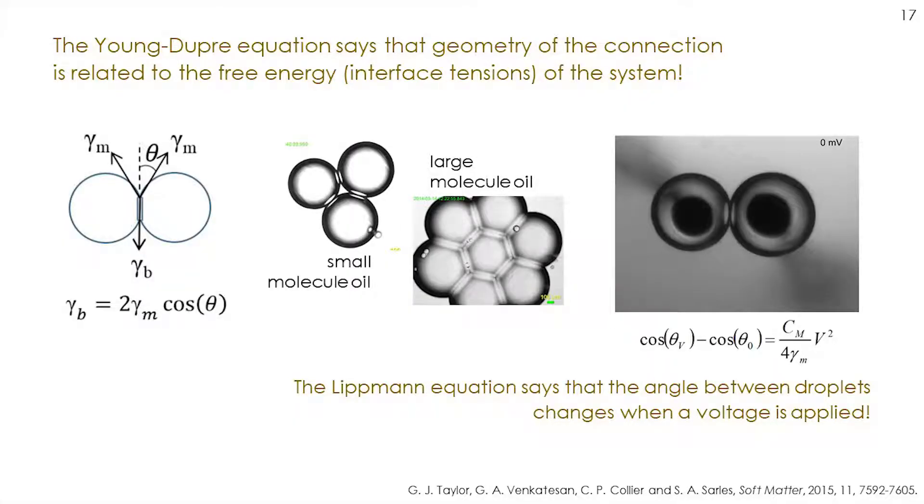A little bit of physics—these are simple geometries, partial spheres stuck together. Just like in the bubbles we were blowing, there's tension. There's tension around the droplet surface and tension of that flat interface. Those tensions pull the thing into whatever shape it wants. We can take measurements of the angle theta and understand information about the tensions of the system. The Lippmann equation says the angle between droplets is a function of charge built up on the interface.